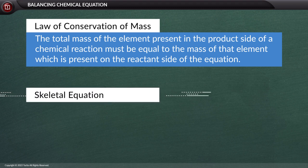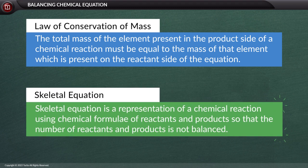Before learning to balance a chemical equation, let us get acquainted with the term skeletal equation. A skeletal equation is a representation of a chemical reaction using chemical formulae of reactants and products, so that the number of reactants and products is not balanced. Thus, a skeletal equation is not in accordance with the law of conservation of mass.